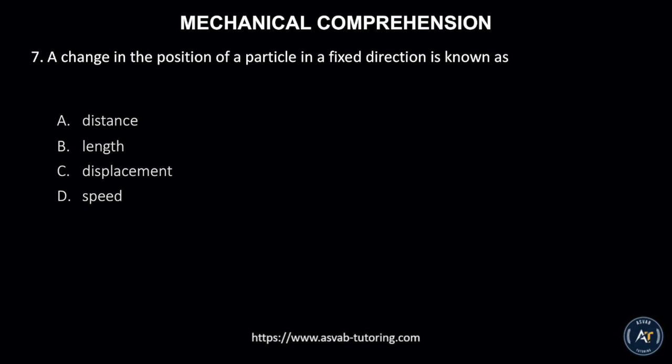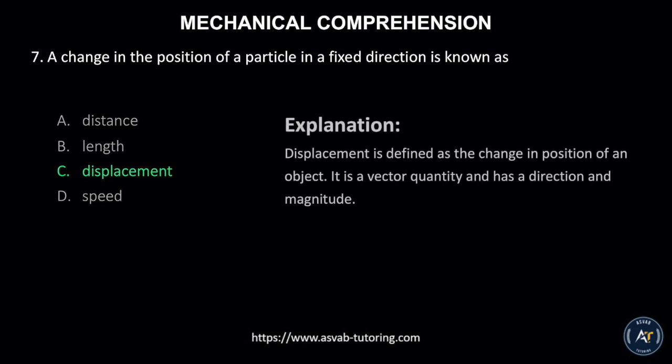Number 7. A change in the position of a particle in a fixed direction is known as? A. Distance, B. Length, C. Displacement, or D. Speed. The correct answer is C. Displacement. Displacement is defined as the change in position of an object. It is a vector quantity and has a direction and magnitude.